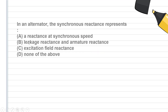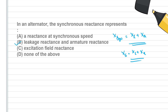In the alternator, the synchronous reactance represents the sum of leakage reactance plus armature reactance. So Xs is equal to XL plus X_armature. The answer is: the leakage reactance and the armature reactance. The synchronous reactance is the sum of leakage reactance plus armature reactance.